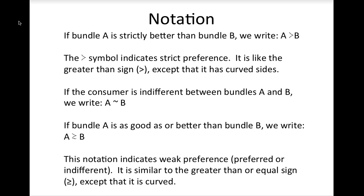If you have two bads, there is no better bundle than zero-zero. For most of our models, we assume this case away by making four assumptions. First, we assume that goods are good. Second, because goods are good, consumers prefer more of a good to less — we call this monotonic preferences. Third, there is no maximum amount a consumer wants; there is always a bundle with a little more that she likes better — we call this local non-satiation. Finally, we assume that consumers prefer averages to extremes, meaning they prefer bundles with average amounts of both goods to extreme bundles — this is convex preferences.